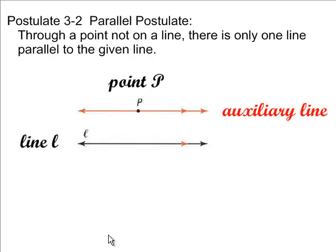Through a point not on a line, so here's a line, and this is a point that's not on that line, there is only one line that is parallel to the first line. And notice the notation. You have the little arrow right there and a little arrowhead right there showing that this line is parallel to that line.